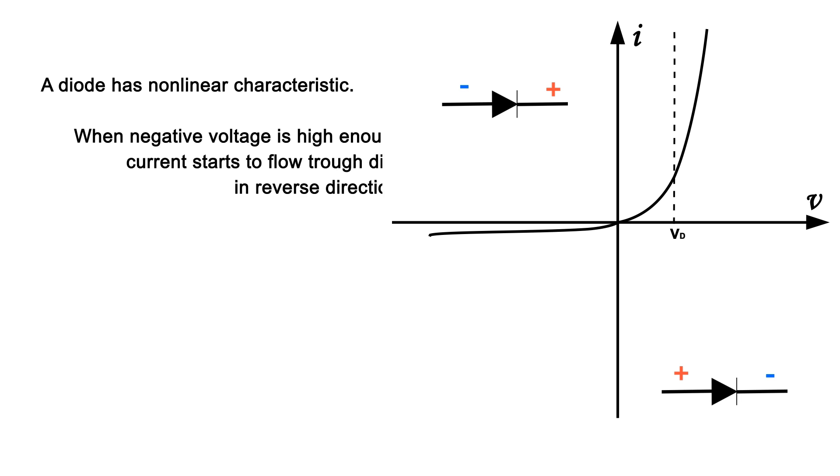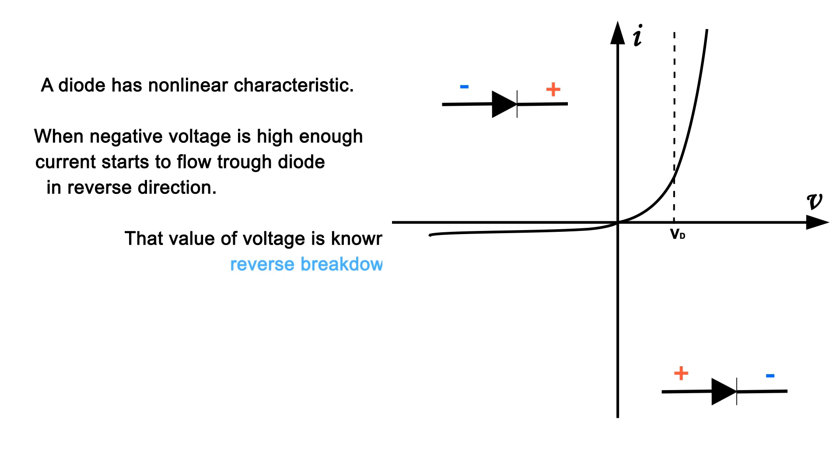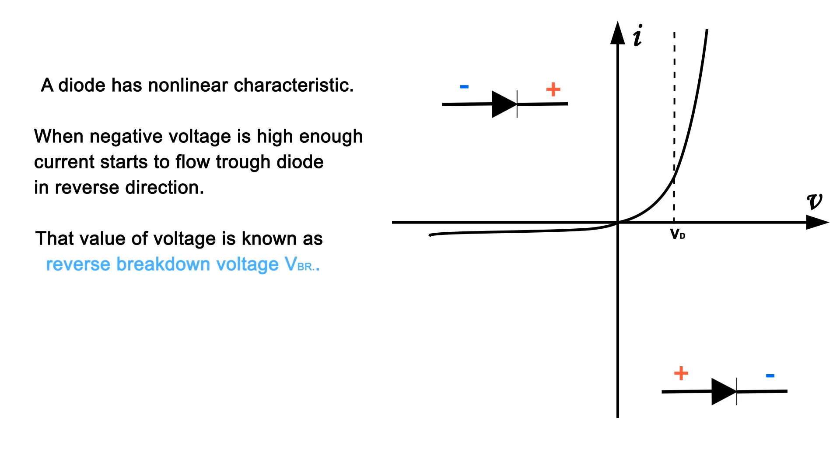When negative voltage is high enough, current starts to flow through the diode in reverse direction. That value of voltage is known as reverse breakdown voltage Vbr.